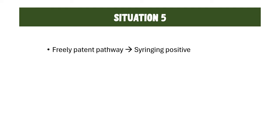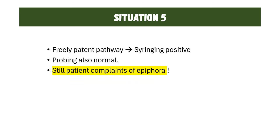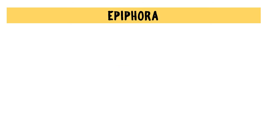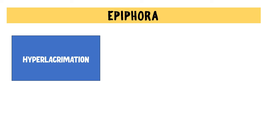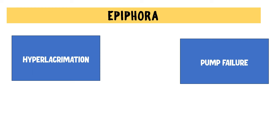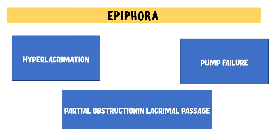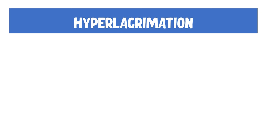Consider a situation where syringing is performed and the patient has a patent pathway — they can taste a salty taste in their throat — and probing is also normal, yet the patient still complains of epiphora or watering. In such a condition, you must consider three important situations: hyperlacrimation, lacrimal pump failure, and partial obstruction in the lacrimal passage.